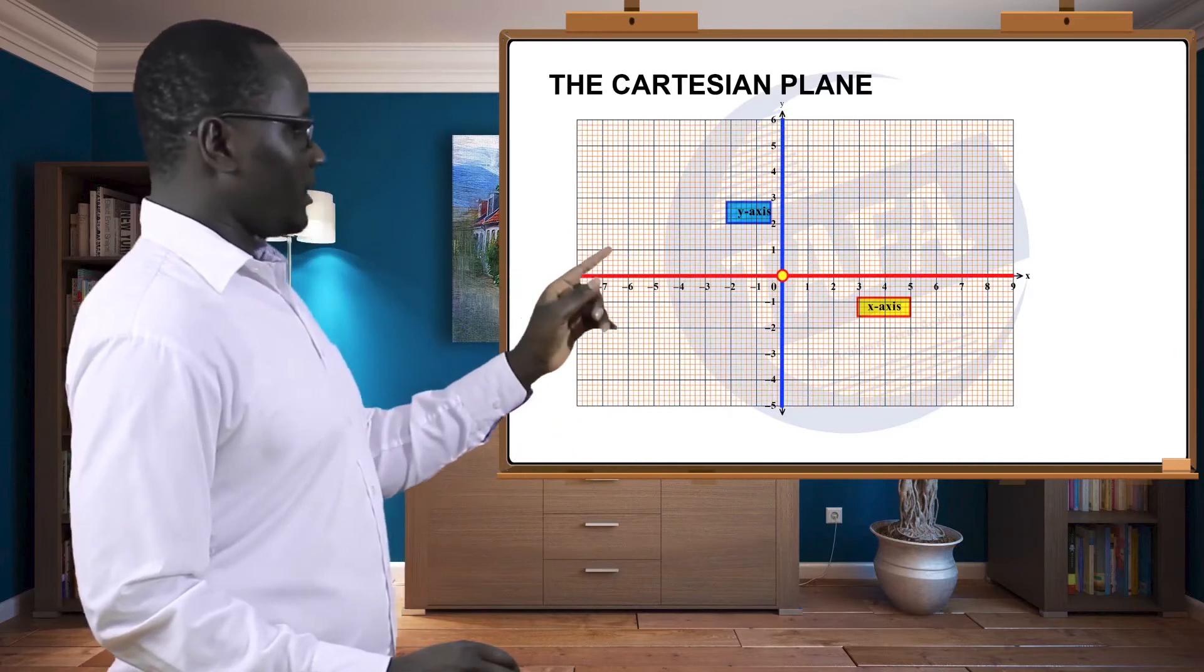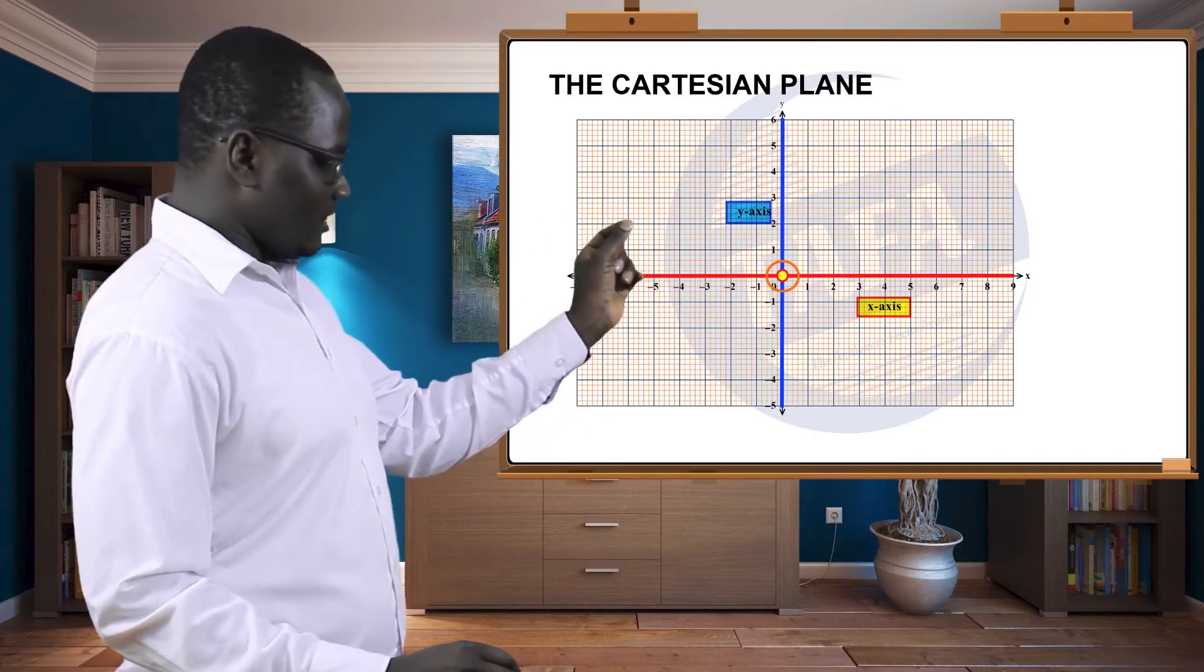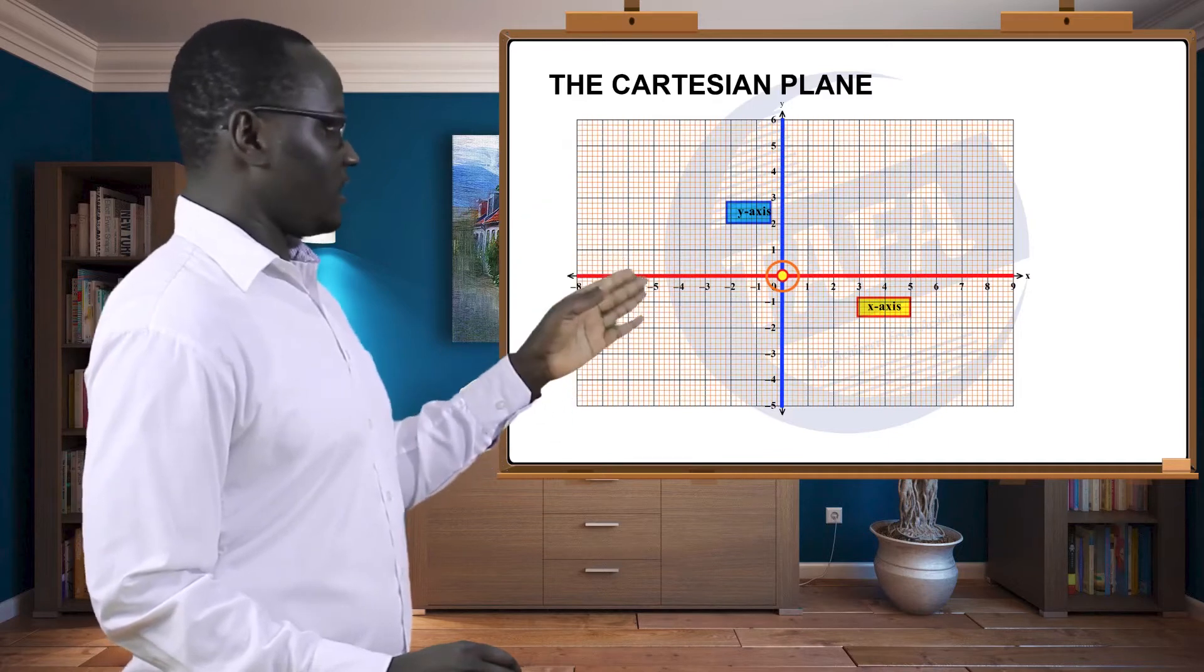They are meeting at the point O, or you can see that zero there. It meets at the origin. That point is called the origin O.